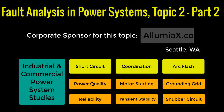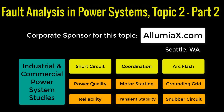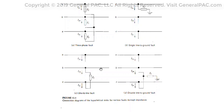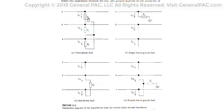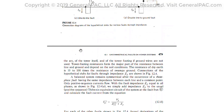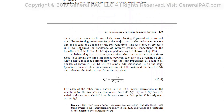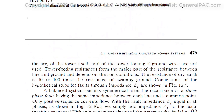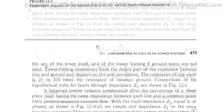Our corporate sponsor for this topic is Illumiax.com from Seattle, Washington. Contact them for industrial and commercial power system studies. This is the second part of this series in which we look at how sequence component networks are derived, and in this part we'll be looking at the three phase fault type, which is a perfectly balanced fault type. So we'll be looking through this document in much more detail.